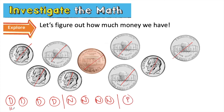Now we can skip count: 10, 20, 30, 40. We have to stop — now what do we do? We press and count: 45, 50, 55, 60, 61. So we have 61 cents.